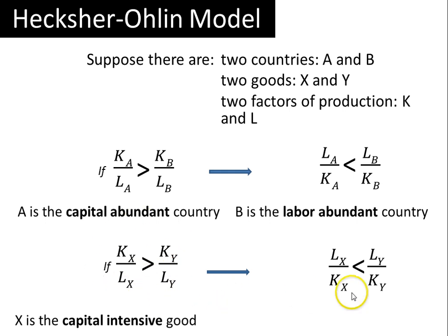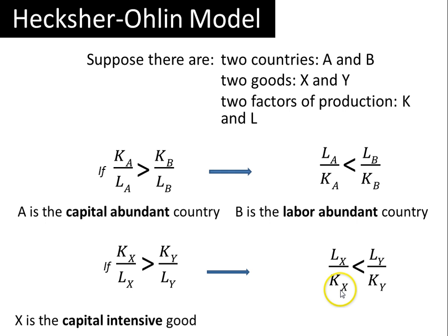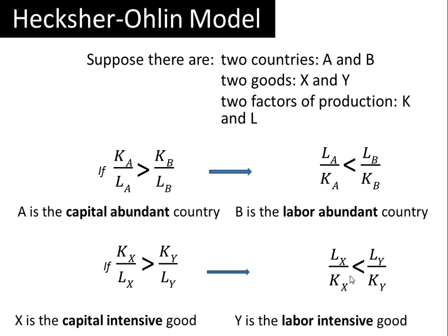If K_X/L_X > K_Y/L_Y, then automatically L_Y/K_Y > L_X/K_X — the fractions and inequality sign are flipped. This means more labor per unit of capital is used in the production of good Y than good X, so Y is the labor-intensive good. Notice that countries are described as abundant — either capital-abundant or labor-abundant — while goods are described as intensive — either capital-intensive or labor-intensive. Intensive is a characteristic of goods; abundance is a characteristic of countries.